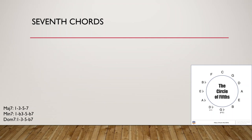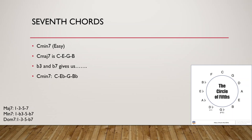C minor 7: C major 7 is C, E, G, B. We flatten the 3rd note — E becomes E flat. We flatten the 7th note — B becomes B flat. C minor 7 is C, E flat, G, B flat.